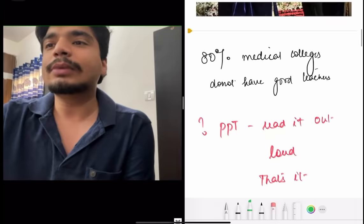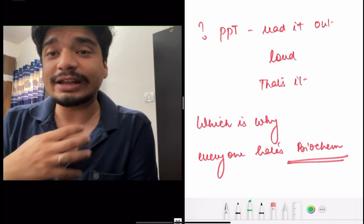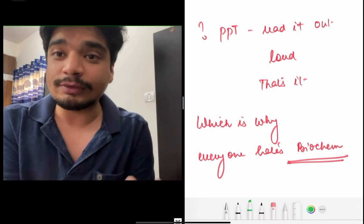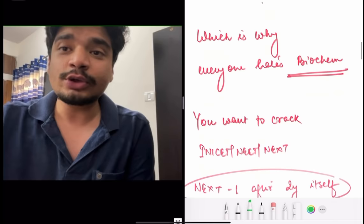So the problem is this is the reason why almost everyone ends up hating Biochemistry. Because Physiology is good to read, so you always end up liking Physiology. But Biochemistry, if someone is not teaching you well, it's impossible to like Biochemistry. You will end up hating Biochemistry. So how do you go about reading these subjects?